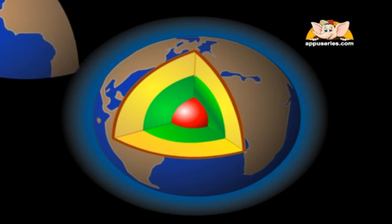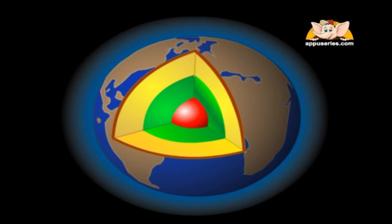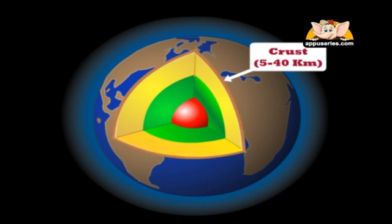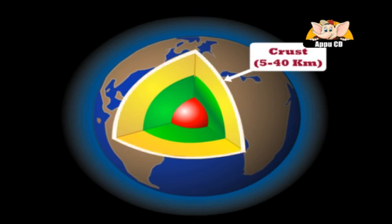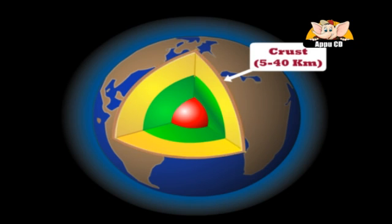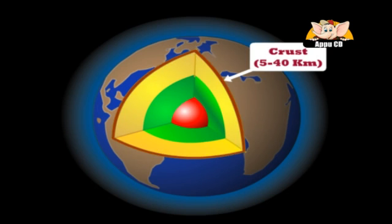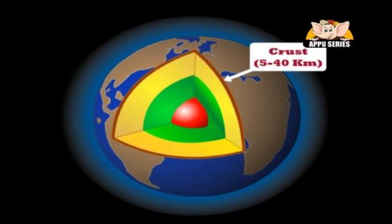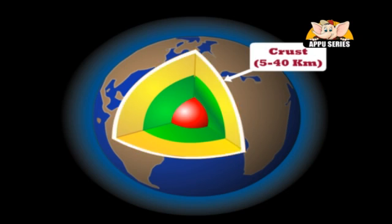The outermost layer of the Earth is the crust. This is the part of the Earth we live on. The crust comprises of the continents and ocean basins. The crust has a variable thickness, being more in the continents and less in the ocean basins. The crust is composed mainly of alumino silicates.